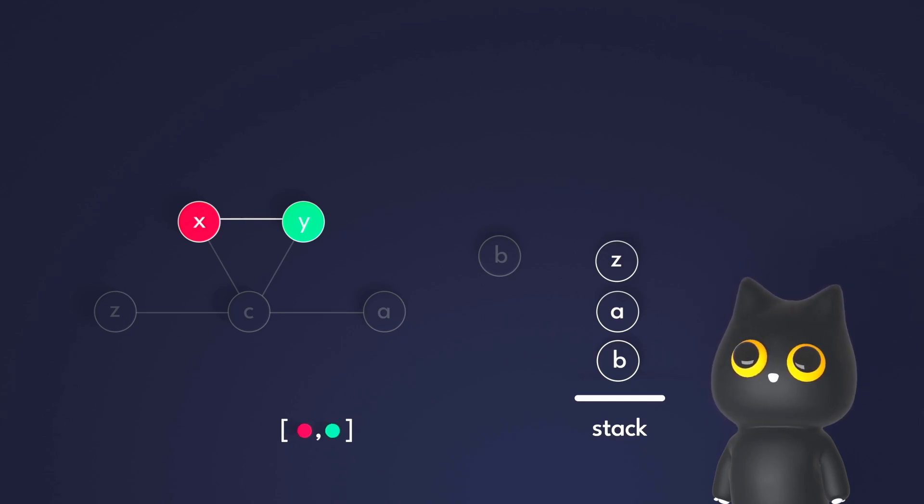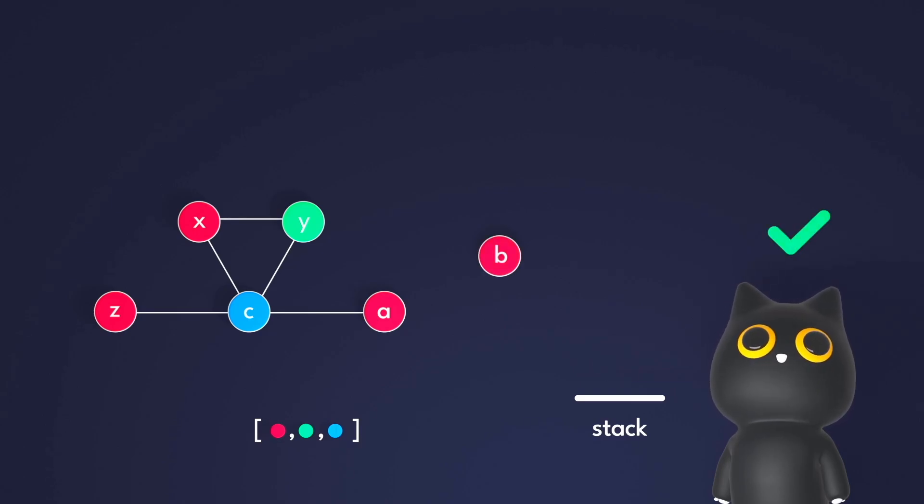Pop c, find that red and green are invalid, and color blue. Then we pop zack, and realize that hey, we can actually color it with the first color in the list, red, so we do so. The same applies for a, and finally, b. Just like that, with this simple heuristic, we have allocated our registers as best as we could. Isn't it amazing?